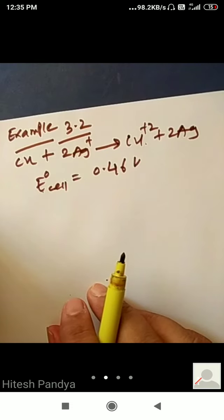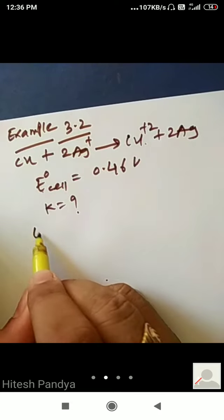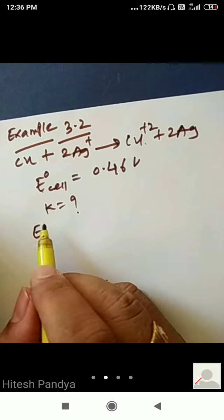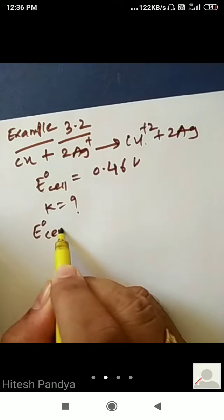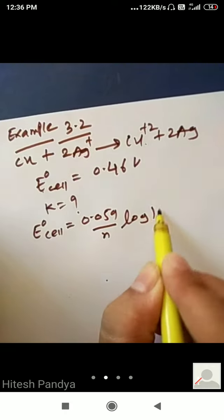Now what do we need to calculate? Calculate equilibrium constant. So, formula apply: E not cell is equal to 0.059 upon N log Kc.